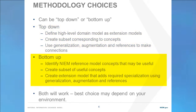In a more bottom-up scenario, you may start by exploring the NIEM reference models, find the concepts that are useful, create a subset model for those that you want to use, and then extend those to add the classes and properties you need for your purpose, again using NIEM UML constructs. Both methodologies will work, as well as combinations of methodologies. The best choice may depend on your particular situation.